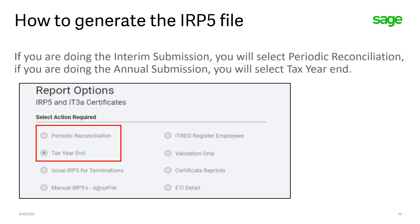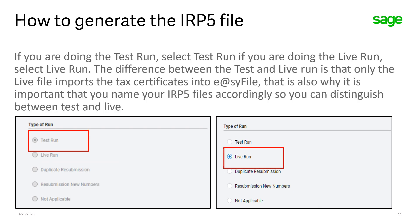If you are doing the interim submission, you will select Periodic Reconciliation. If you are doing the annual submission, you will select Tax Year End. We always do the test run first — in that instance, you will select Test Run. If you are going to do the live run, you will select Live Run. The difference between the test and the live run is that only the live file will import the tax certificates into EASY file.